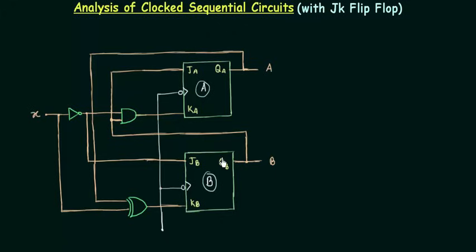We don't have to find out the output equation; we only have to find out the input equation. Our task is a little bit easier, but at the same time our task is tough because we have to find out the next state values depending upon the values of JA, KA, JB, and KB. You will see this when we move to our state table. So without wasting any time let's move to step 1.